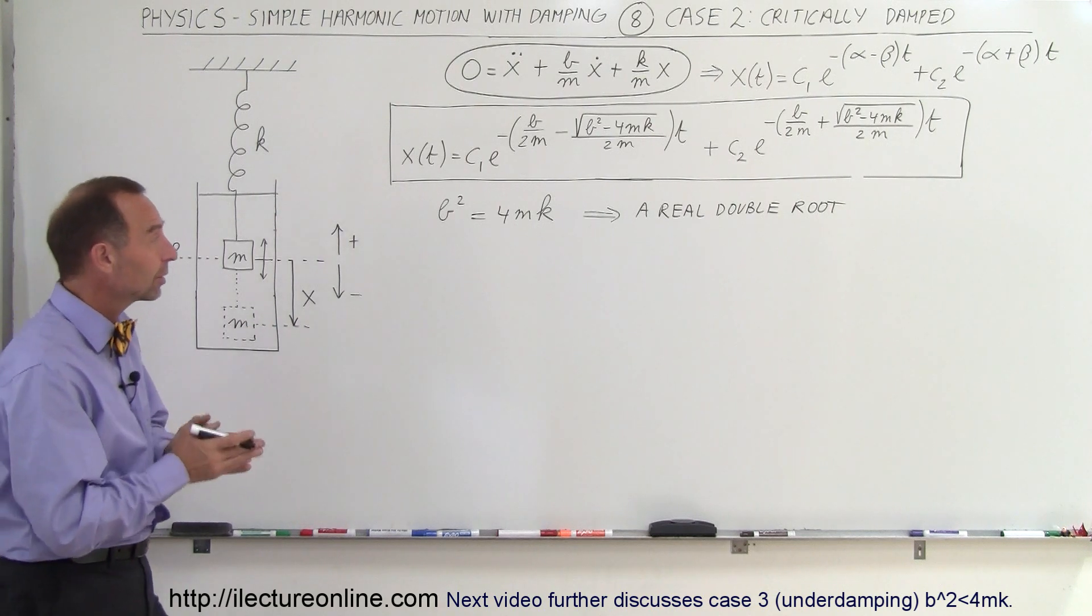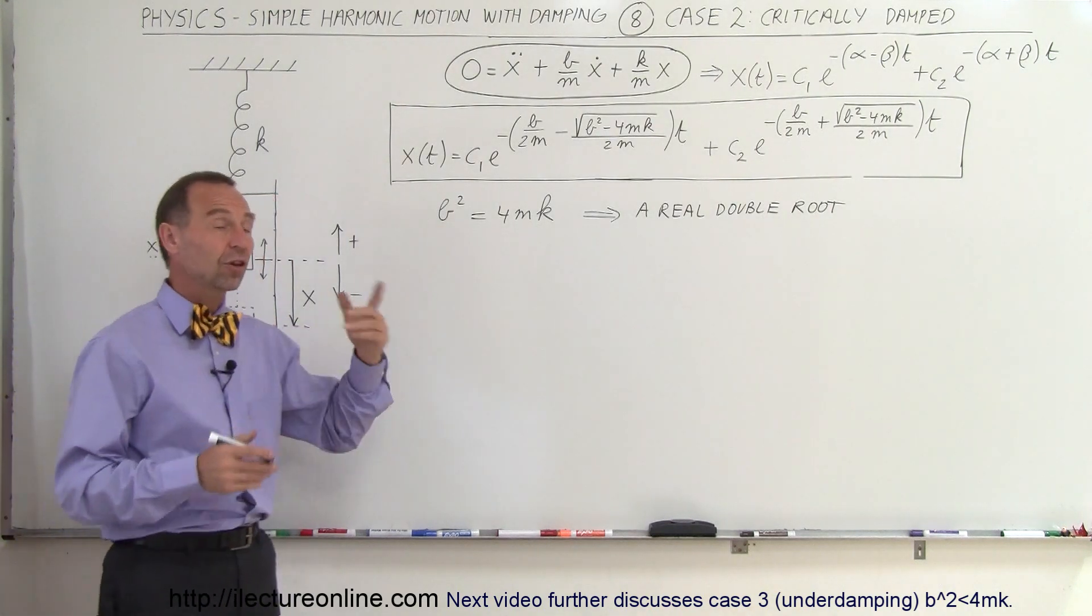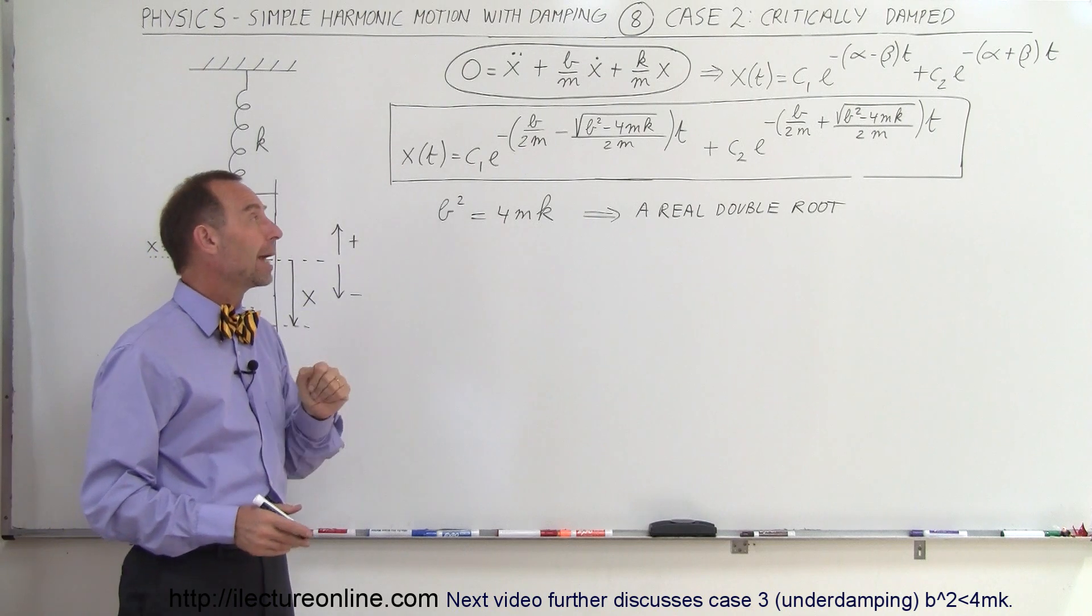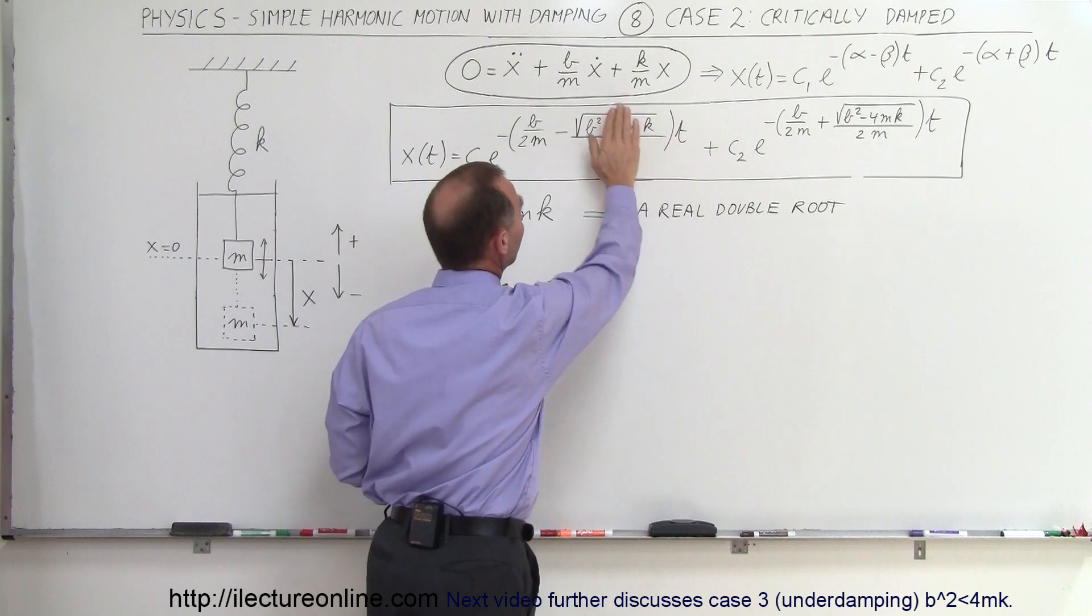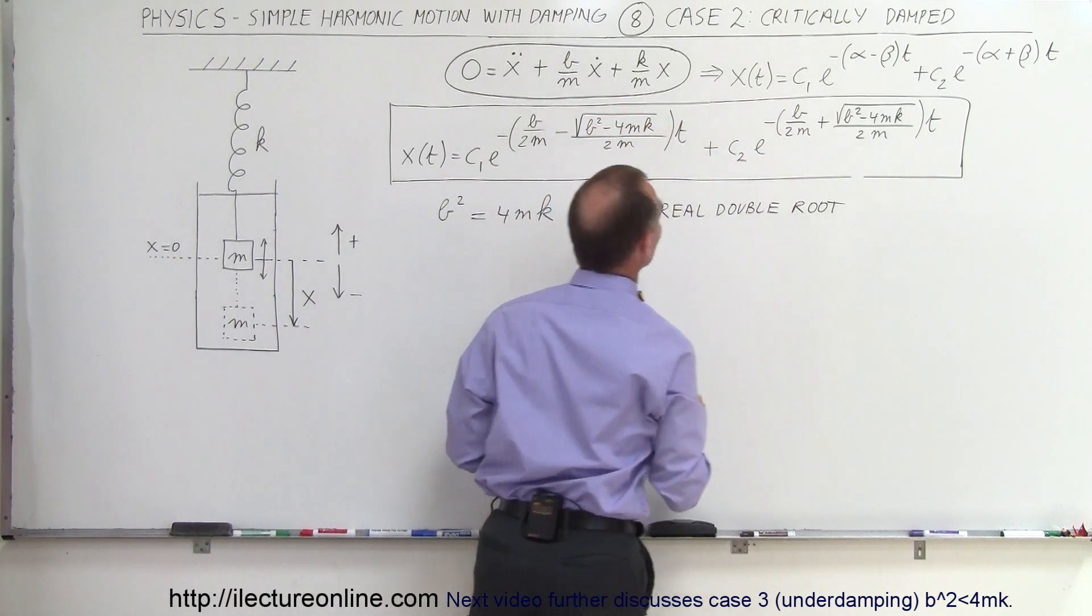So what that means is that critical damping, the damping factor is such that b squared is equal to 4mk. What does that mean? Well that means that the radical here goes to 0, so this goes to 0 and this goes to 0.